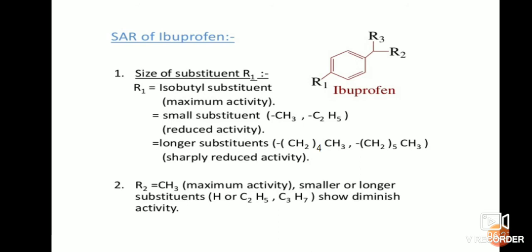For example, smaller groups such as CH₃ or C₂H₅ reduce the activity, and longer substitutions with more than four carbons also reduce the activity. For the R2 position, if a CH₃ group is present it produces maximum activity, while smaller or longer substitutions diminish the activity.